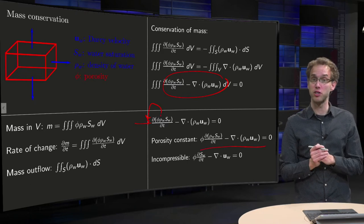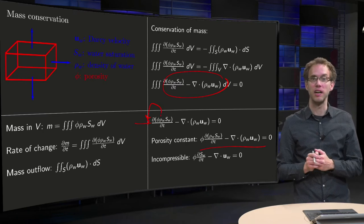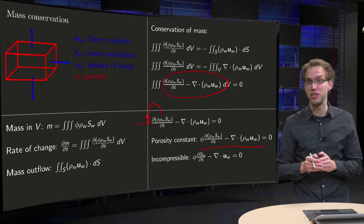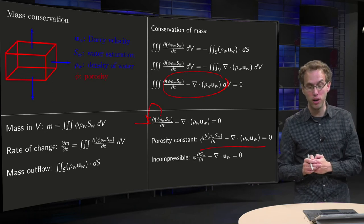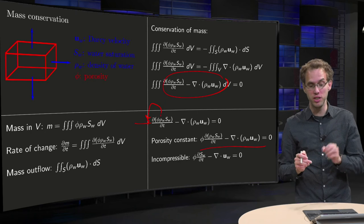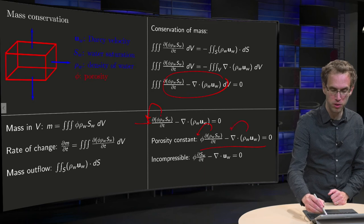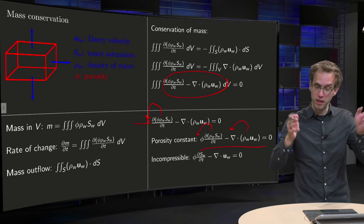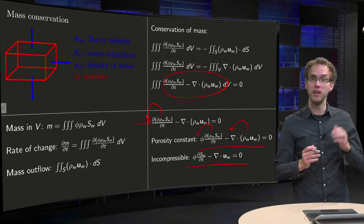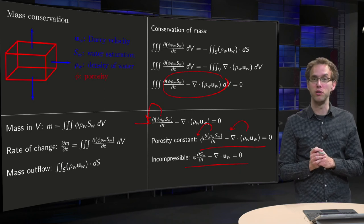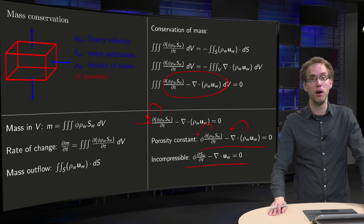And if you are using water or oil, something like that, you often can neglect the density variations. You often can model them as incompressible. So that means that both dρW/dt and the spatial derivatives of ρW are zero. So you can take out the ρW's and then you can cancel them out. So then you are left with the easier PDE, φ times dS/dt minus the divergence of u equals zero. And that's the PDE that expresses our mass conservation.